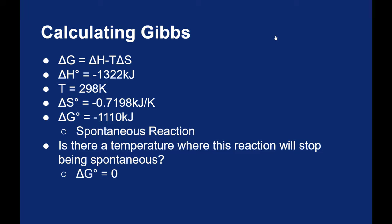So if you use the same delta H and delta S and set delta G equal to zero, you would find a temperature of 1837 kelvin, which is a really high temperature. But again if you remember back to that chart from the previous video, we said a negative delta H and negative delta S would be spontaneous at low temperatures and stop being spontaneous at high temperatures.